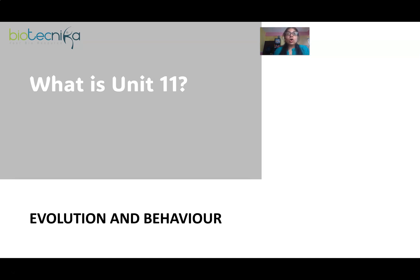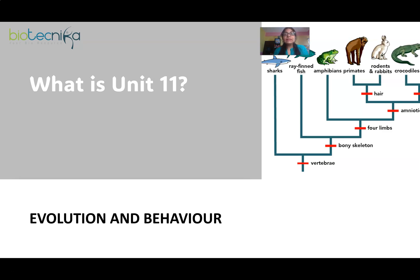Unit 11 also comprises abiotic synthesis — how life originated on Earth, on a planet where there was no life, how the first cell was formed, and from there how the complexity of life formed that we see now in the present. It comprises everything about evolution — how the different species, different genera, and different kingdoms of organisms have evolved on Earth.